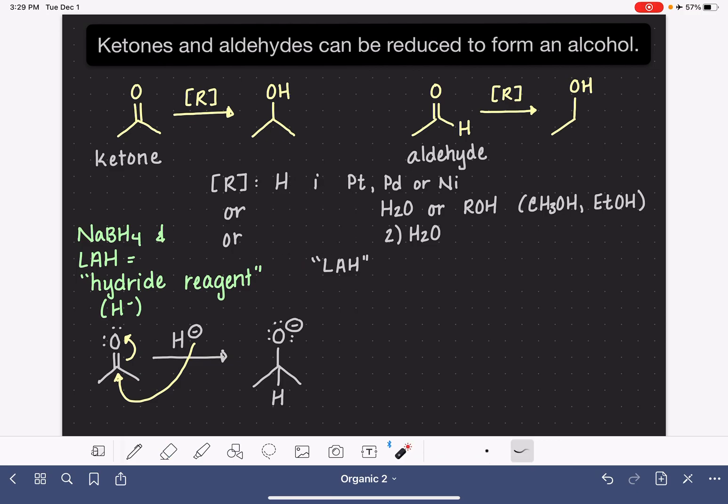Now, if we're doing this reaction with sodium borohydride, we have some water or some alcohol present in the mixture. If we're doing this with LAH, we bring water in as a second step. Regardless, we have water or alcohol as the second step in this mechanism, and it is just being used to protonate the oxygen, the O minus. So this gives us, ultimately, the alcohol.